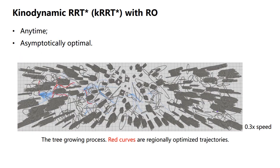Here illustrates the process of tree-growing integrating the regional optimizer. It has the anytime property and is asymptotically optimal.